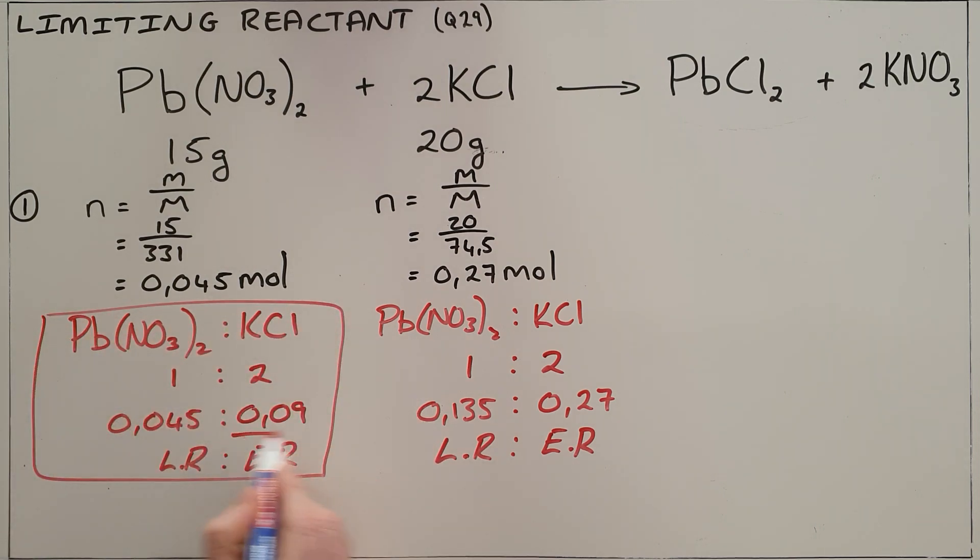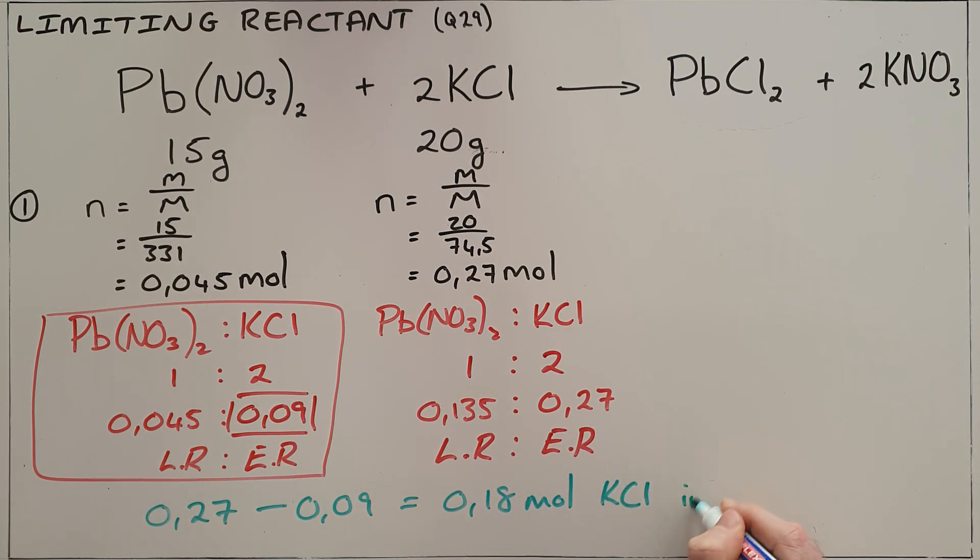that we would only use up 0.09 moles of potassium chloride, which means that if we started with 0.27 moles and we used up 0.09 moles, that must mean that there was 0.18 moles of potassium chloride in excess.